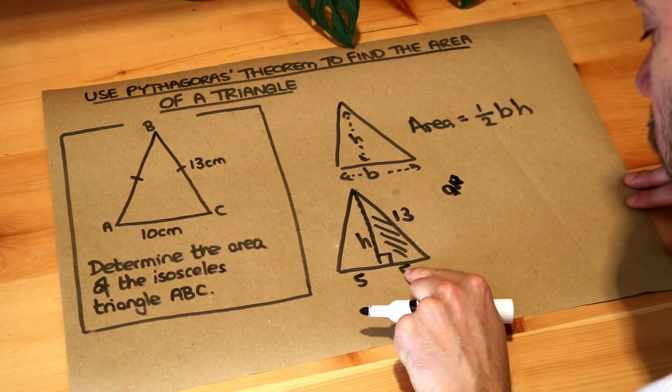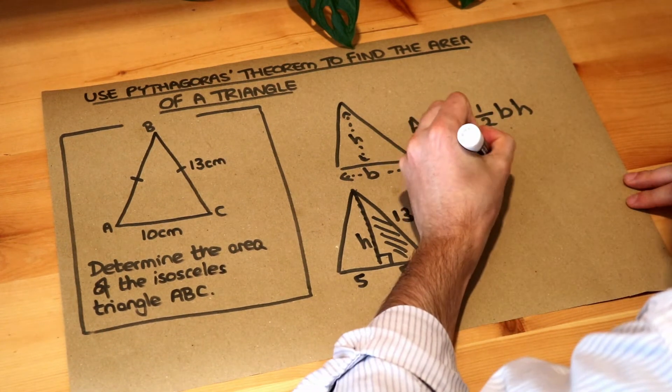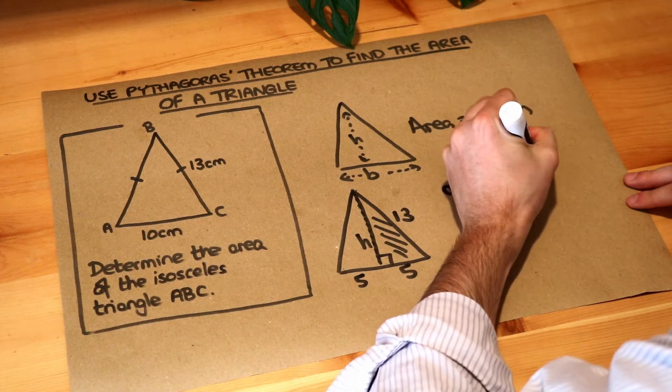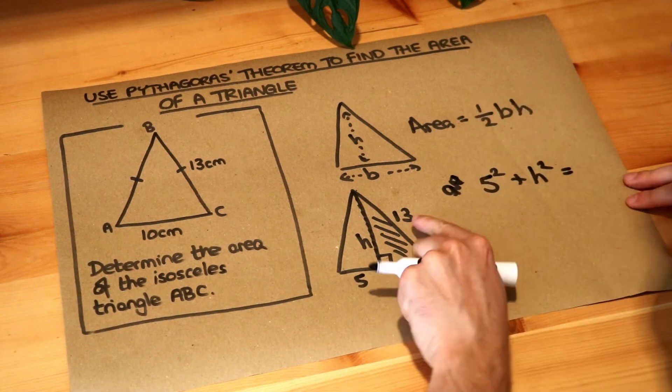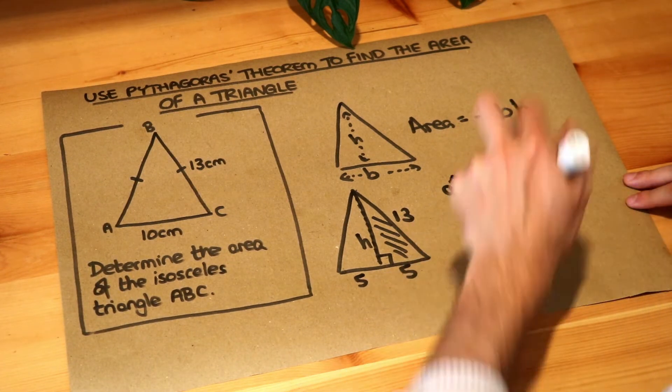Remember, if we have one shorter length squared, so 5 squared, plus the other shorter length squared, H squared in this case, that gives you the hypotenuse, 13 squared.